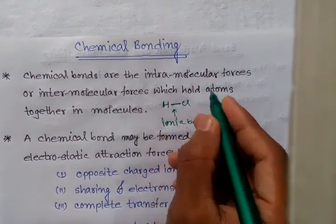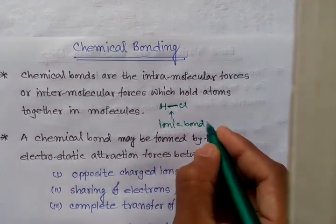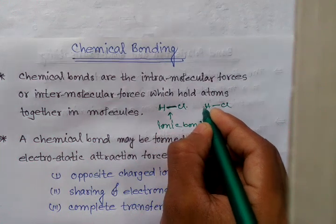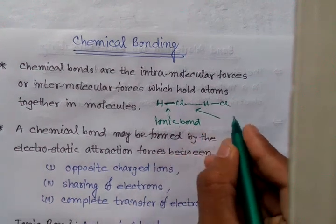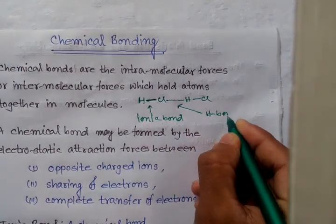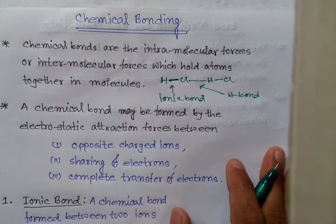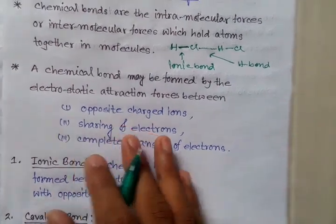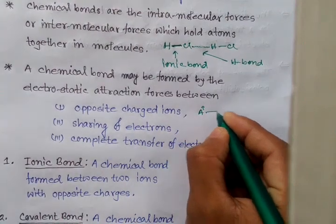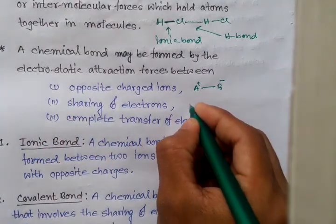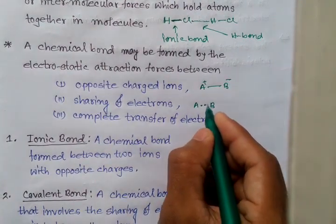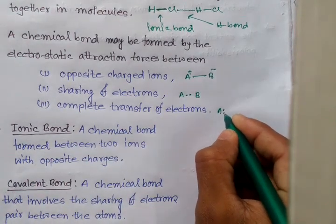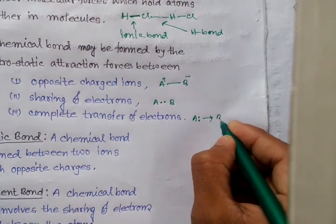This force holding HCl together is an intramolecular force. If we add another HCl molecule, hydrogen bonds to the electronegative atom — this is a hydrogen bond. Chemical bonds may be formed by electrostatic attraction between two opposite charges, by sharing of electrons, or by complete transfer of electrons from one atom to another.